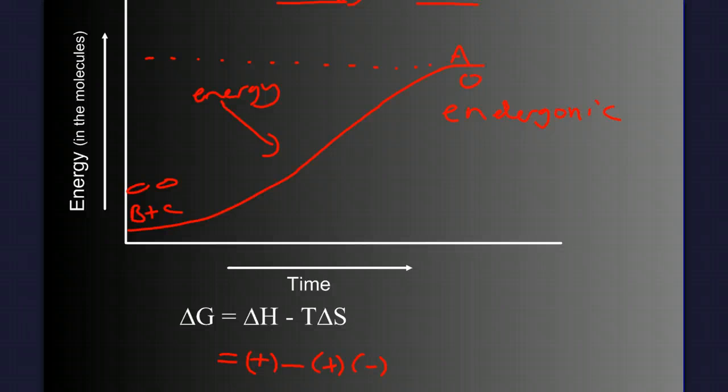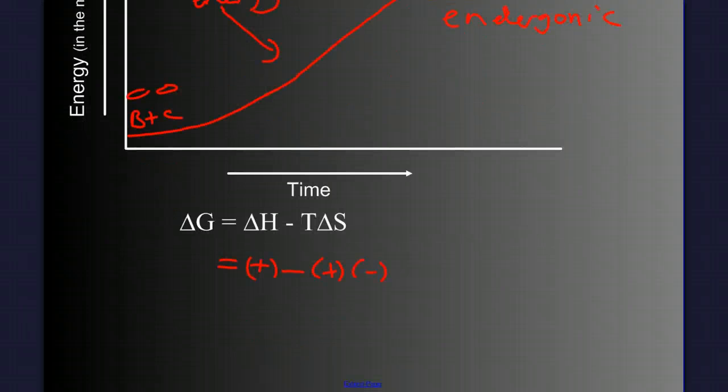So what does this mean mathematically? That means that we have a positive number. A positive number times a negative number is always a negative number. And we subtract a negative. That's like adding a positive. So we have a positive number plus a positive number. And so the value for delta G has to be positive, which is a non-spontaneous reaction.